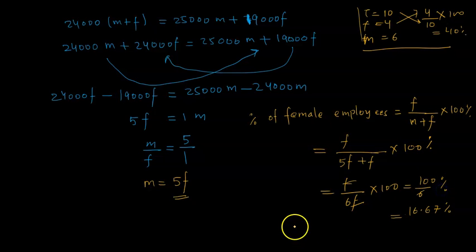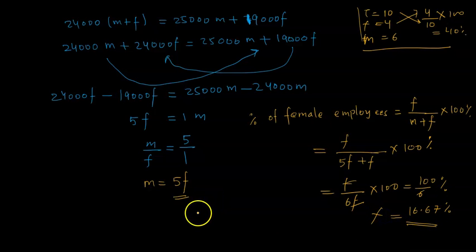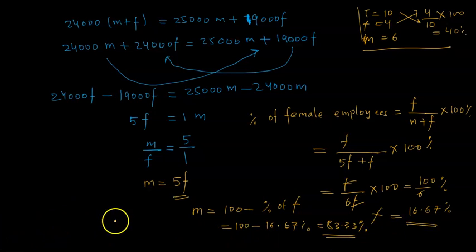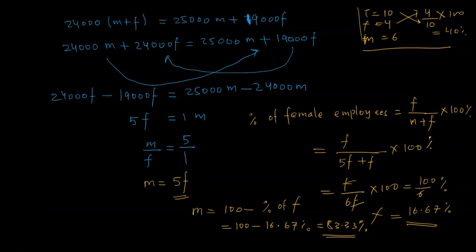Since 16.67 percent are female, the percentage of male employees would be 100 minus 16.67, which gives 83.33 percent. So just by knowing the average salary, the total average salary, and the average salaries of males and females, we could find out the percentage of male and female employees in the organization. That is what arithmetic mean can help you with. Thank you.